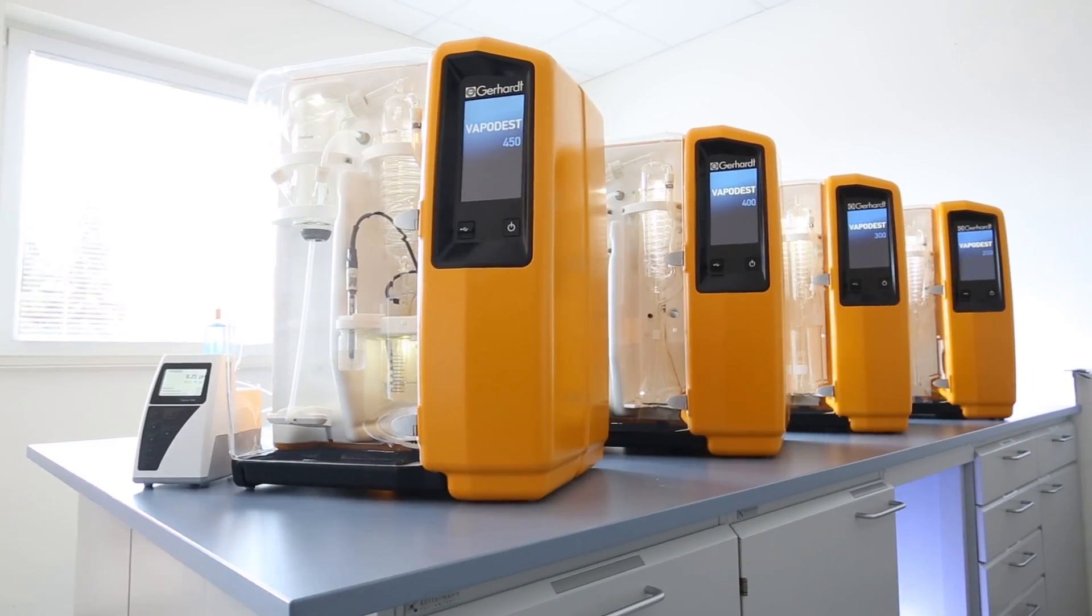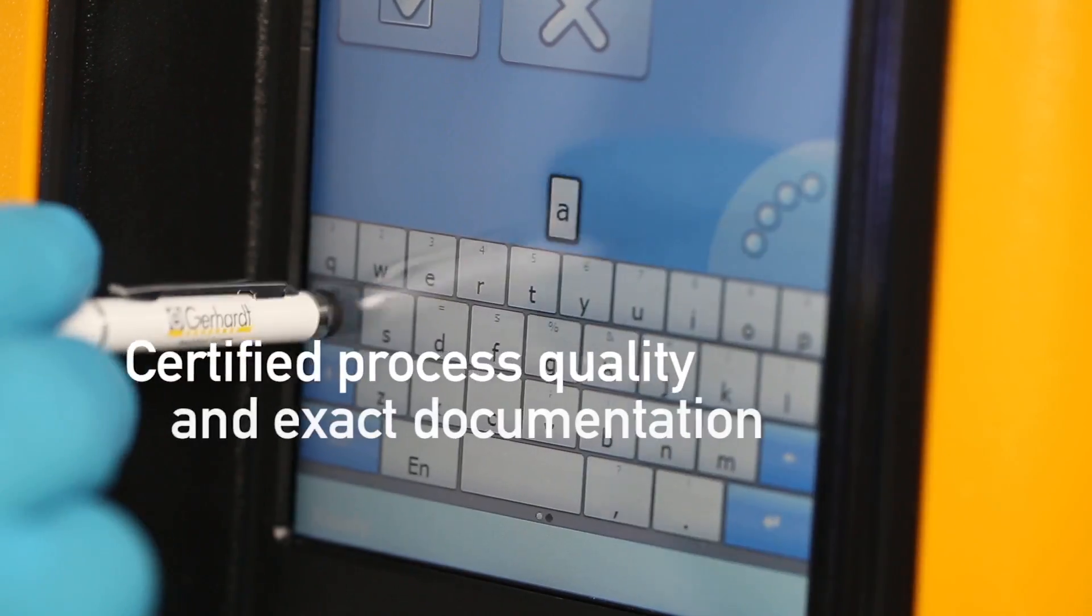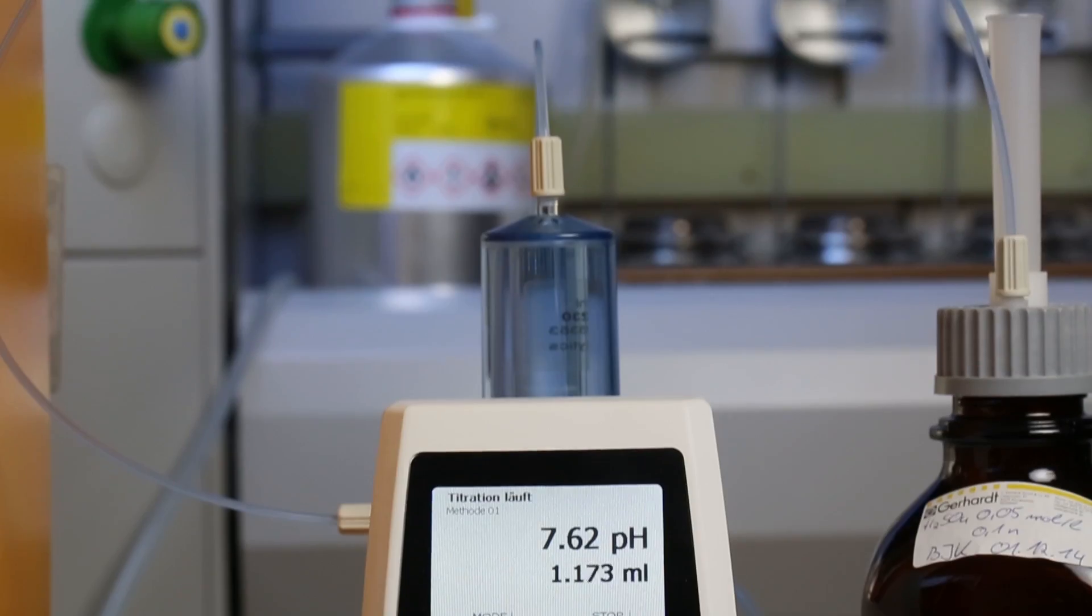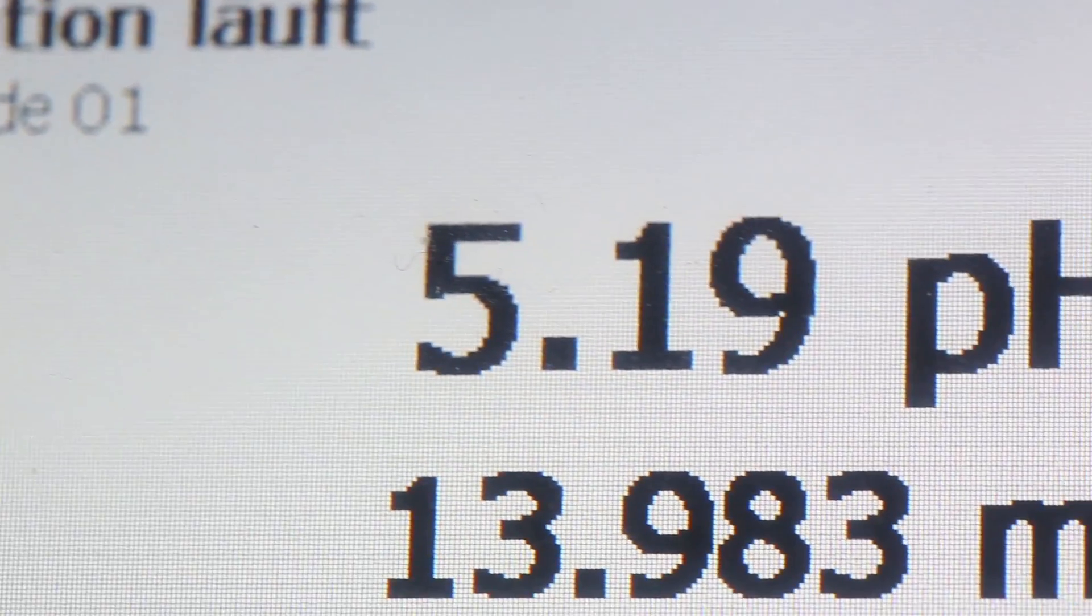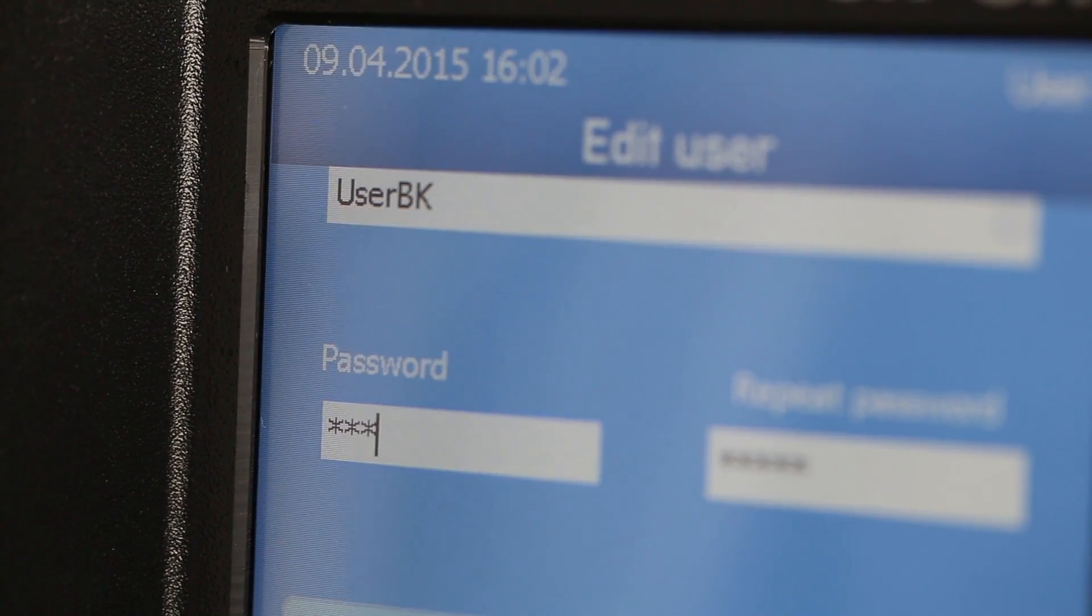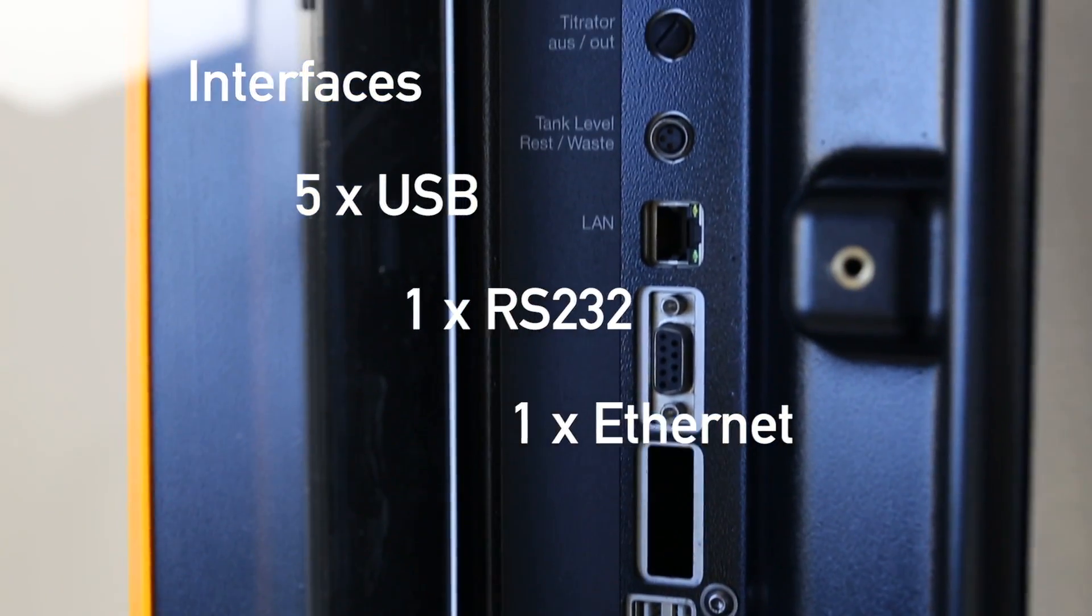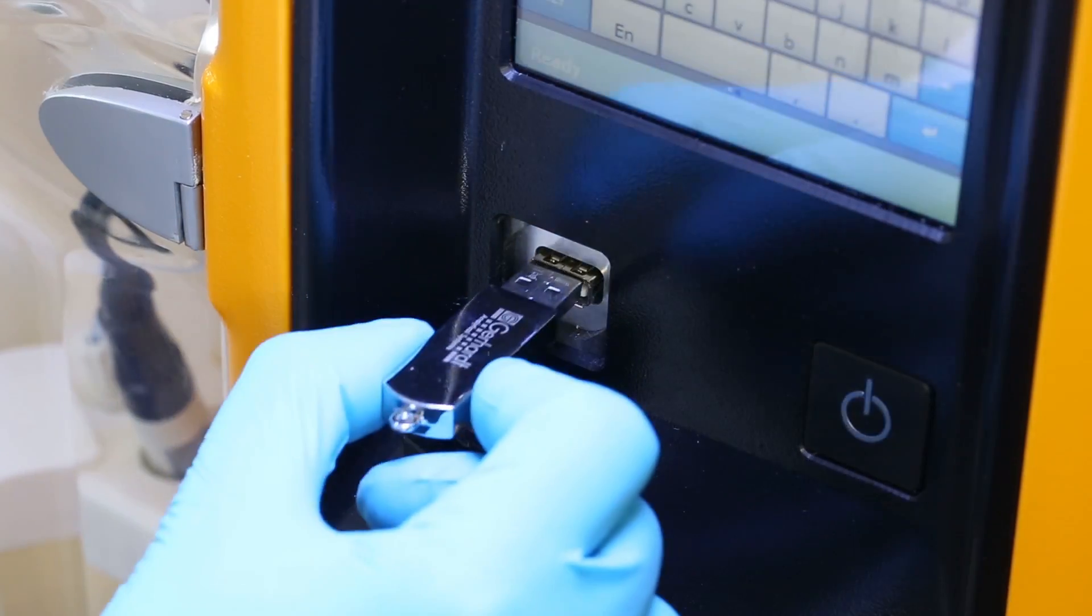Our new VapoDest devices now also do the laborious documentation tasks for you. They can record all relevant user, process and device data required by accredited laboratories in accordance with ISO 17025 and GLP. You can export the device data to LIMS by a USB stick.